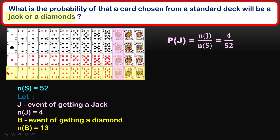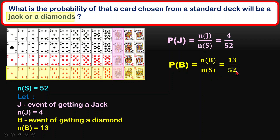Then we want the diamonds, shown in yellow. The event of getting diamonds has 13 cards altogether. So the probability of event B — getting a diamond — is 13 over 52. To calculate jack or diamond, we need to note the intersection: is there any card that is both a jack and a diamond? We notice there is one such card, so P(J∩B) = 1 over 52.